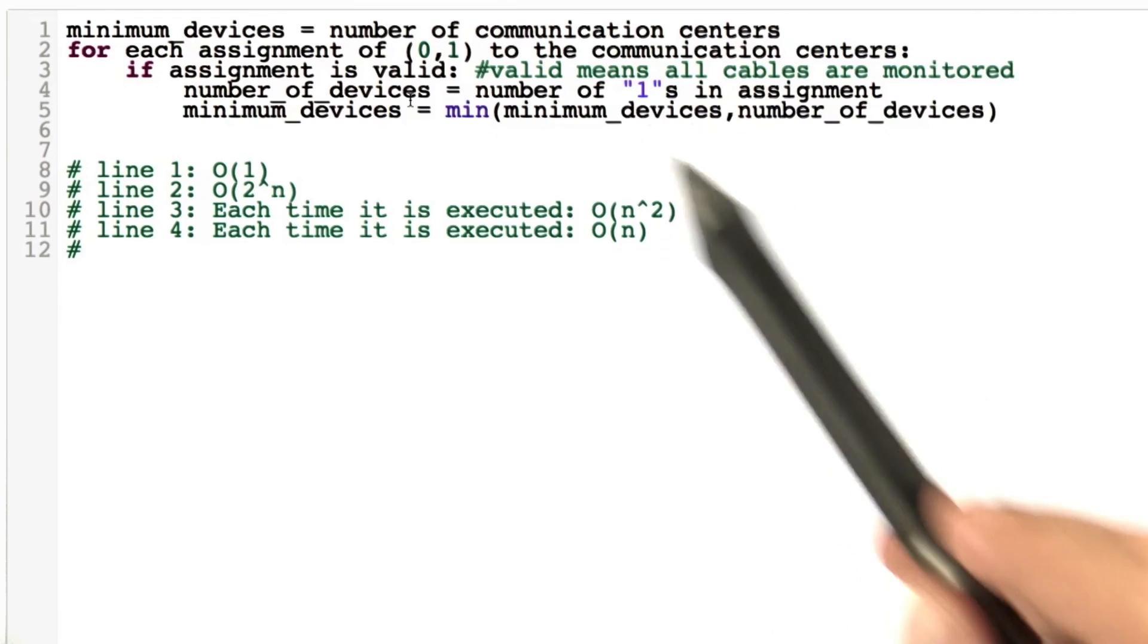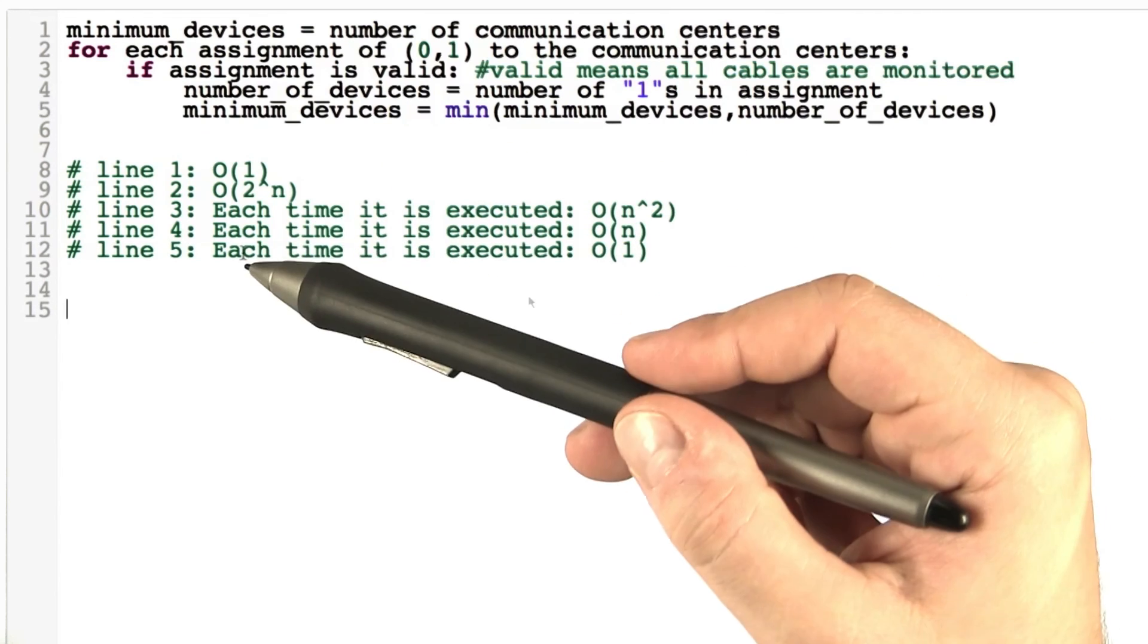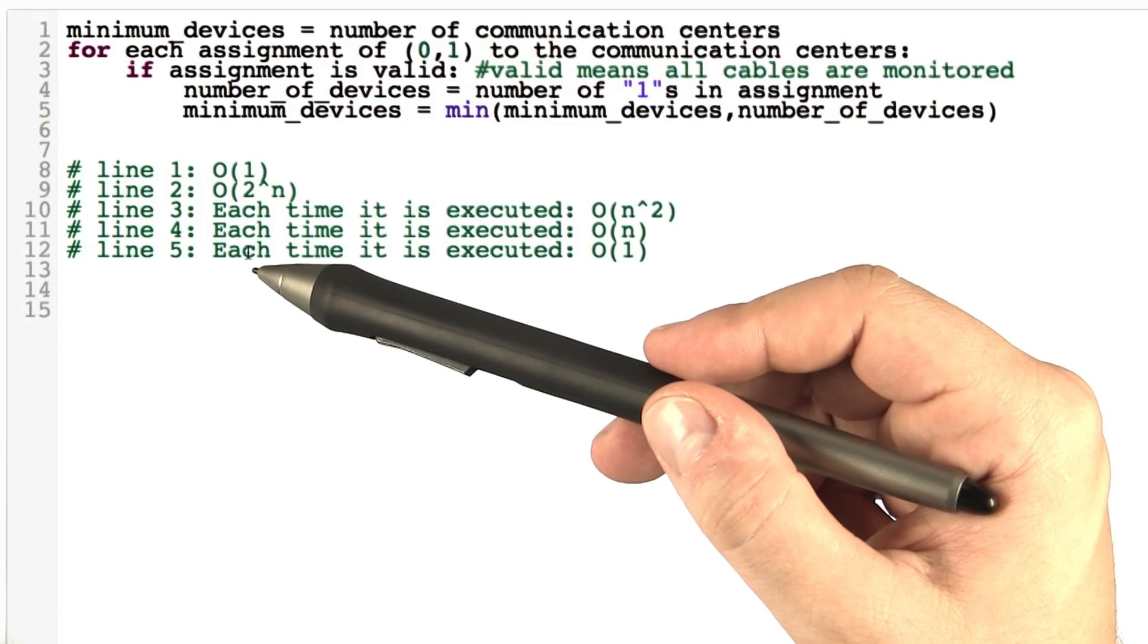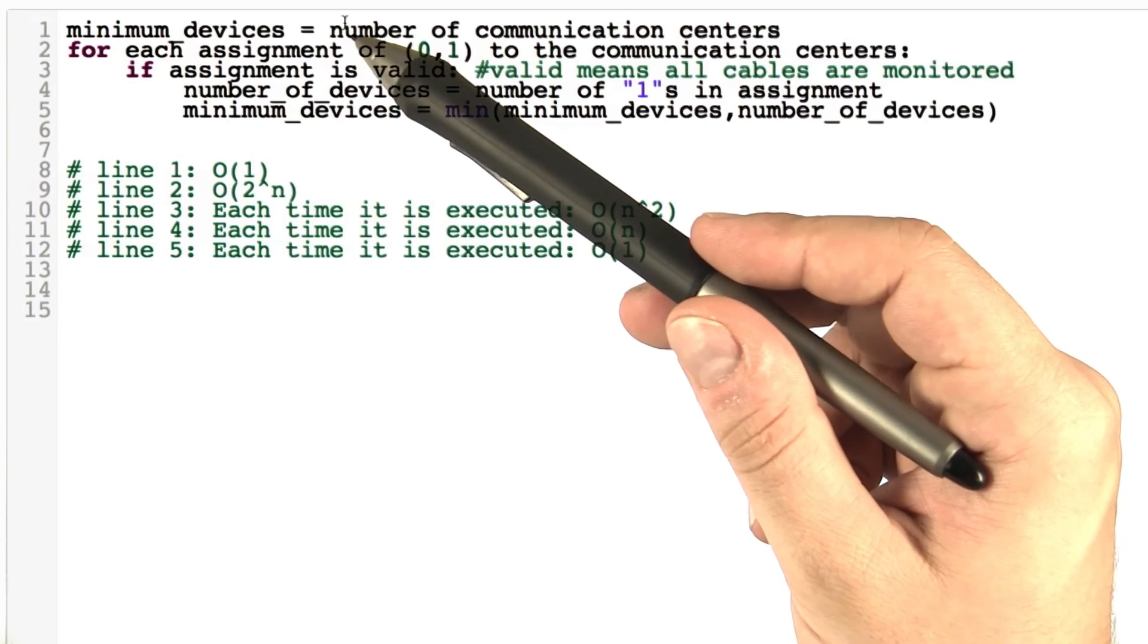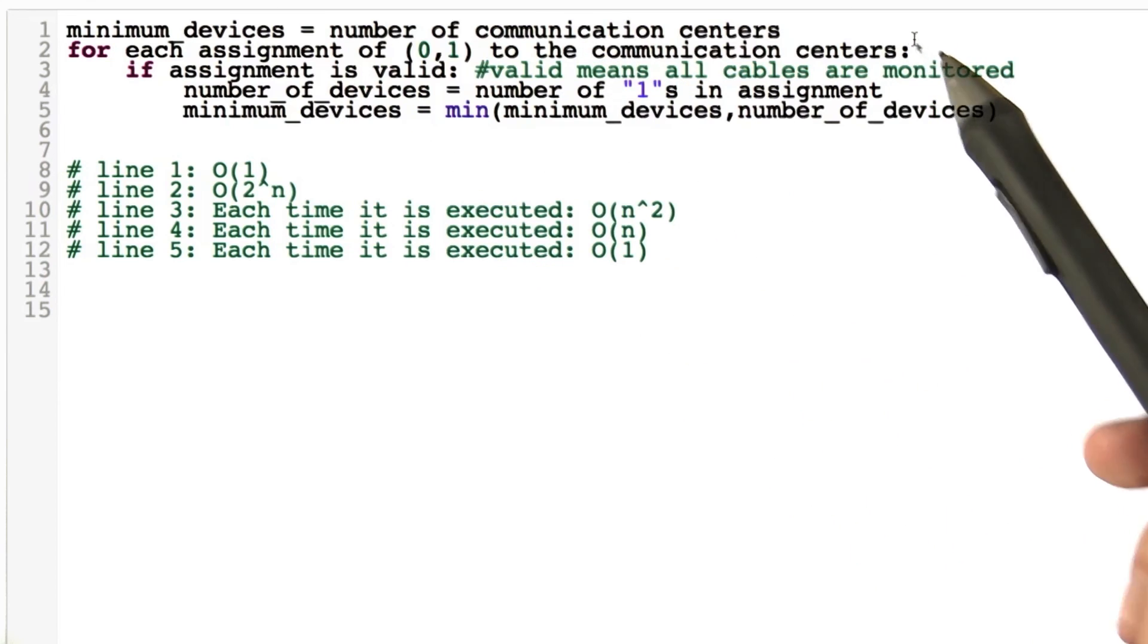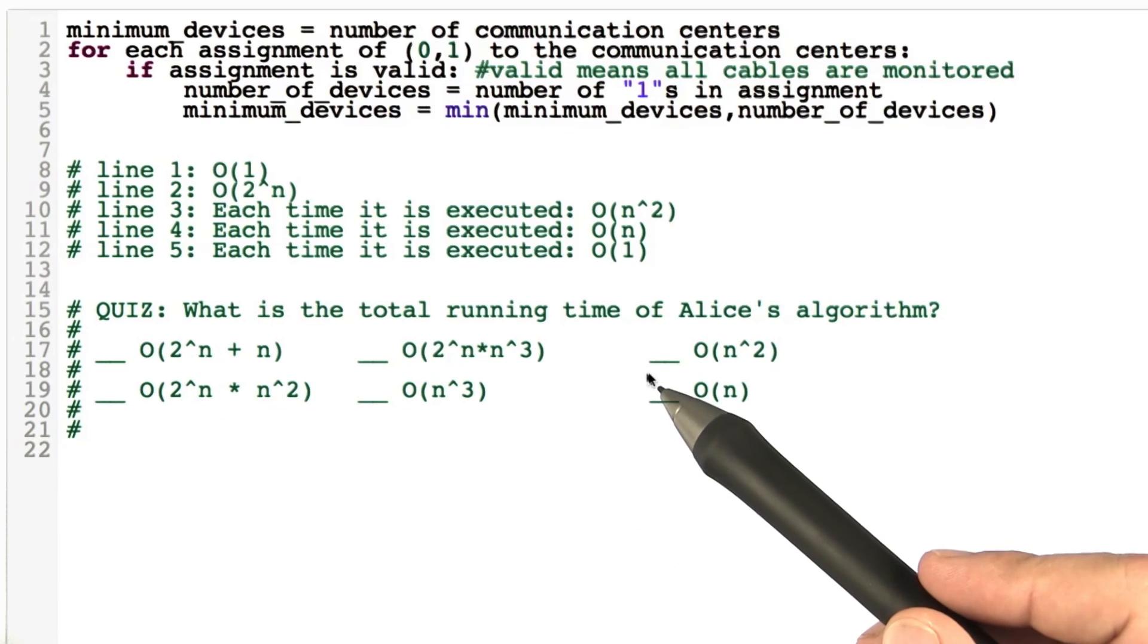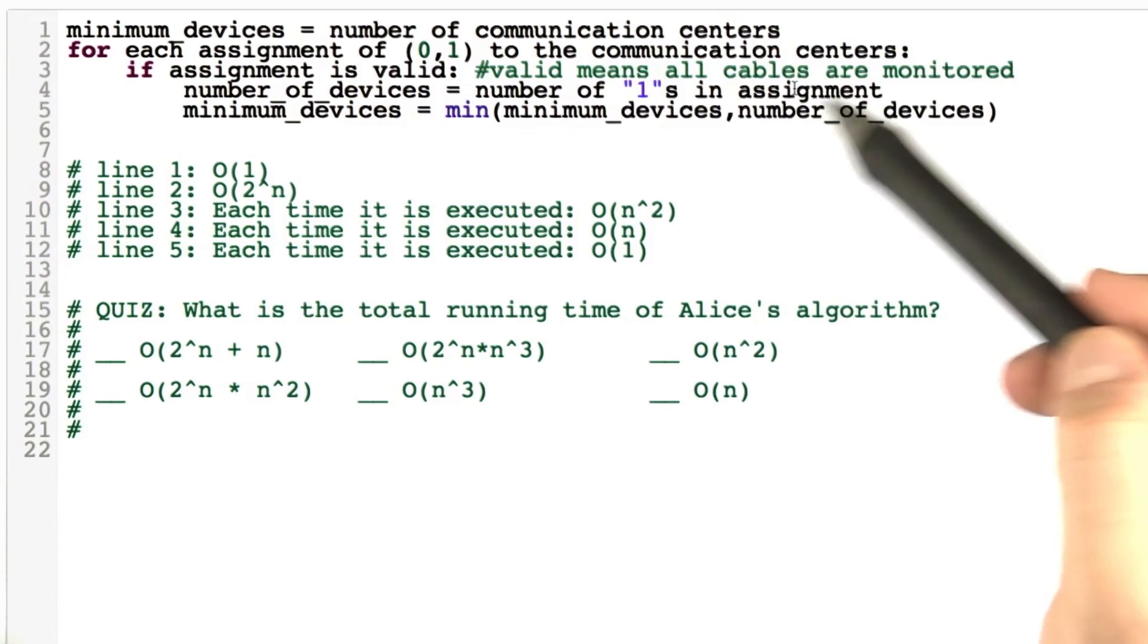It always takes two values and produces a minimum. So as announced as our next quiz, I would like you to take this information and figure out what the overall running time of Alice's algorithm will be given a network of n communication centers. So which of these six possibilities is the correct running time of Alice's algorithm above?